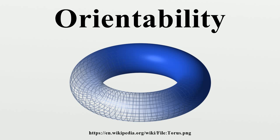A surface S in the Euclidean space R3 is orientable if a two-dimensional figure cannot be moved around the surface and back to where it started so that it looks like its own mirror image. A surface is orientable if a consistent concept of clockwise rotation can be defined on the surface in a continuous manner — that is to say, a loop going around one way on the surface can never be continuously deformed to a loop going around the opposite way. This turns out to be equivalent to the question of whether the surface contains no subset that is homeomorphic to the Möbius strip.